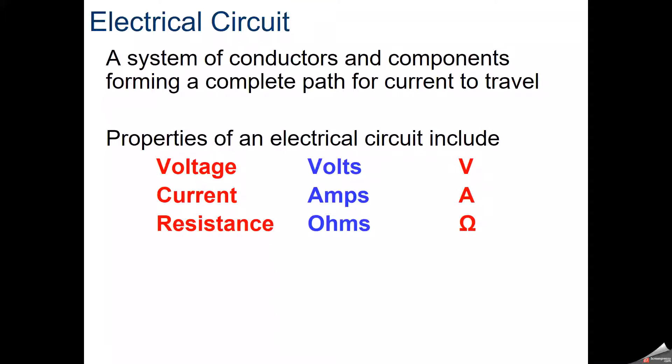The different properties we're going to talk about are voltage, which we measure in volts and label with a V; current, which we measure in amps with A; and resistance, measured in ohms with the omega symbol.